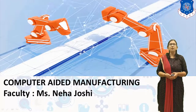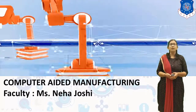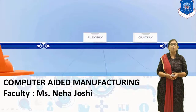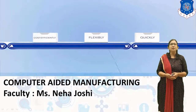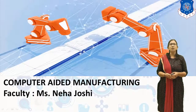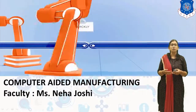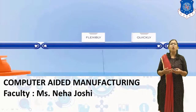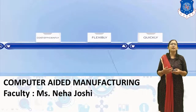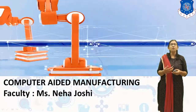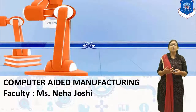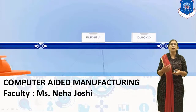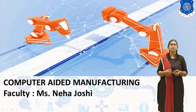Let's start with our 7th chapter, that is Computer Integrated Production Management System. In the previous session, we discussed about Production Planning and Control, then Objective of Production Planning and Control, Function of Traditional PPC, and Problem Associated with the Traditional PPC.